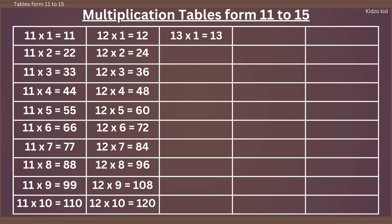13 ones are 13, 13 twos are 26, 13 threes are 39, 13 fours are 52, 13 fives are 65.